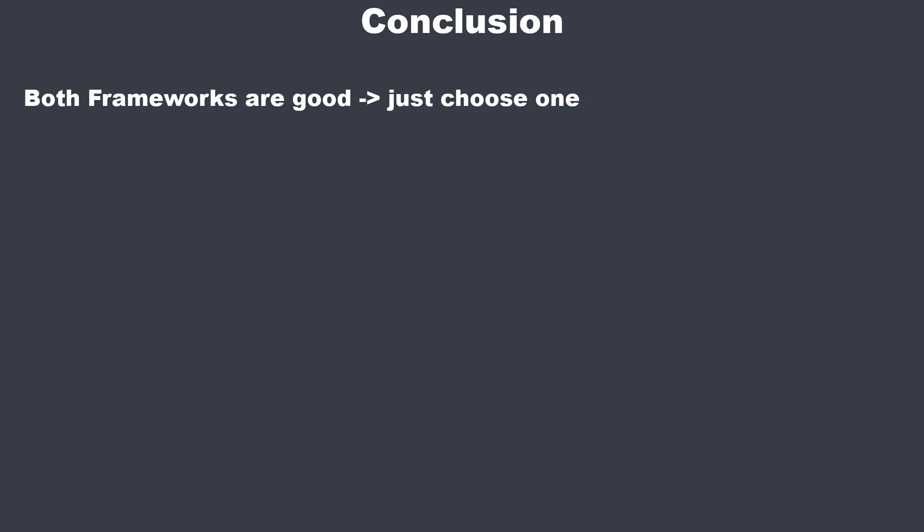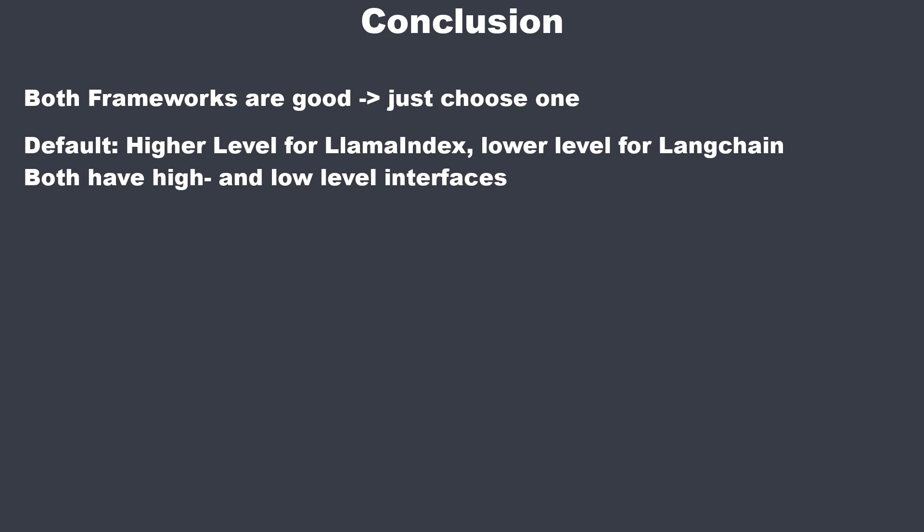So the key takeaways are that both frameworks work pretty similarly and are straightforward to use. One key difference is that the default use of LangChain is more low-level, while LlamaIndex is higher-level. LangChain had a high-level chain interface which was removed because many people were fighting the framework to customize prompts. LlamaIndex also provides a lower-level API if you want more control. In my opinion, LlamaIndex seems a little bit easier to learn since LangChain is the bigger framework, but if you learn one, you can easily switch to the other. Thanks for watching.